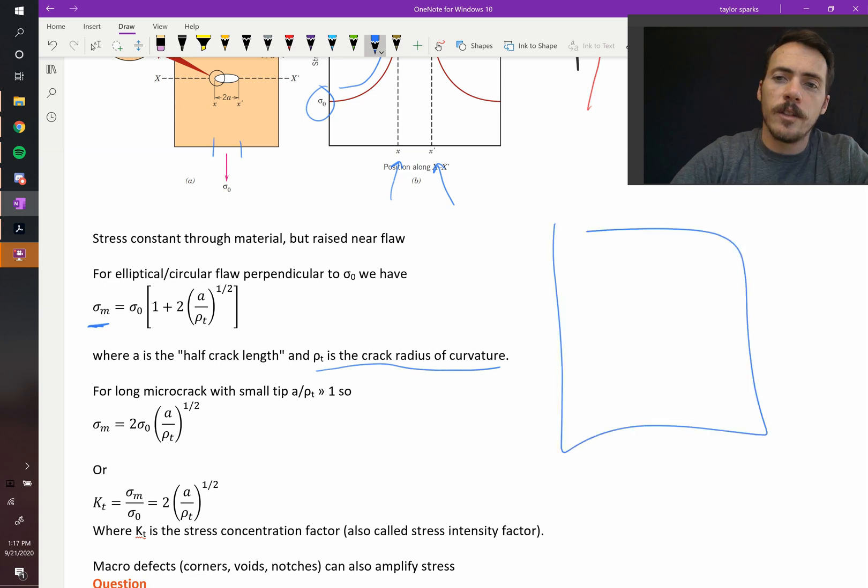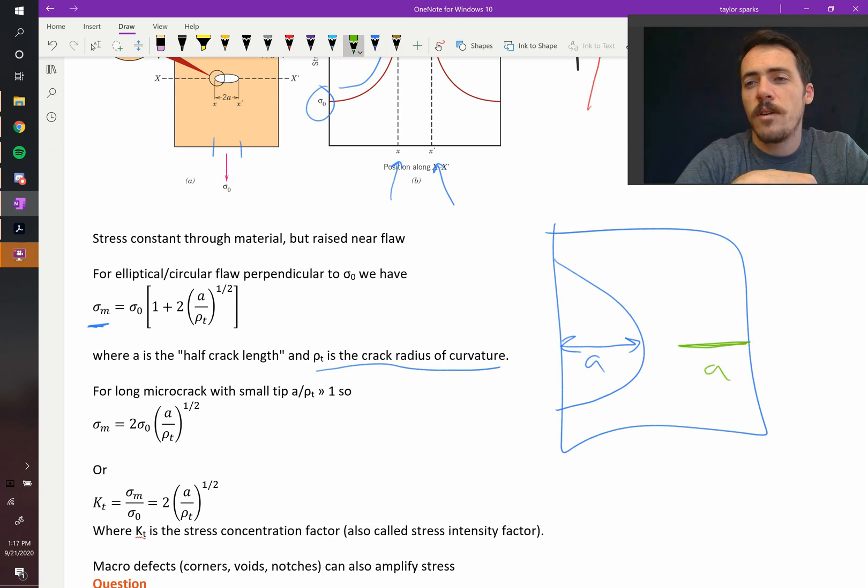So what does this mean? If you've got a material like this with a big blunt crack, which has some half crack length A, since it's coming in from the surface, that should behave differently than if you're on the other side, you've got this scenario. In both cases, the crack length, half crack length A is the same.